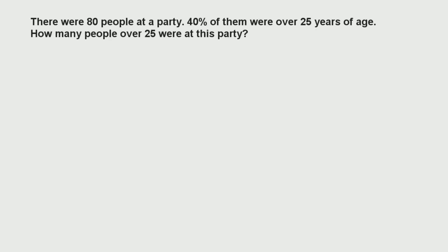Now we'll look at another example — another way that percentage of a number can be asked. This time we're given a number and have to find a certain percentage of it. In this example, there were 80 people at a party; 40% of them were over 25 years of age. How many people over 25 were at this party? In the previous example we found what one number is as a percentage of another, whereas here we have to find a certain percentage of a number to know what value that will be.